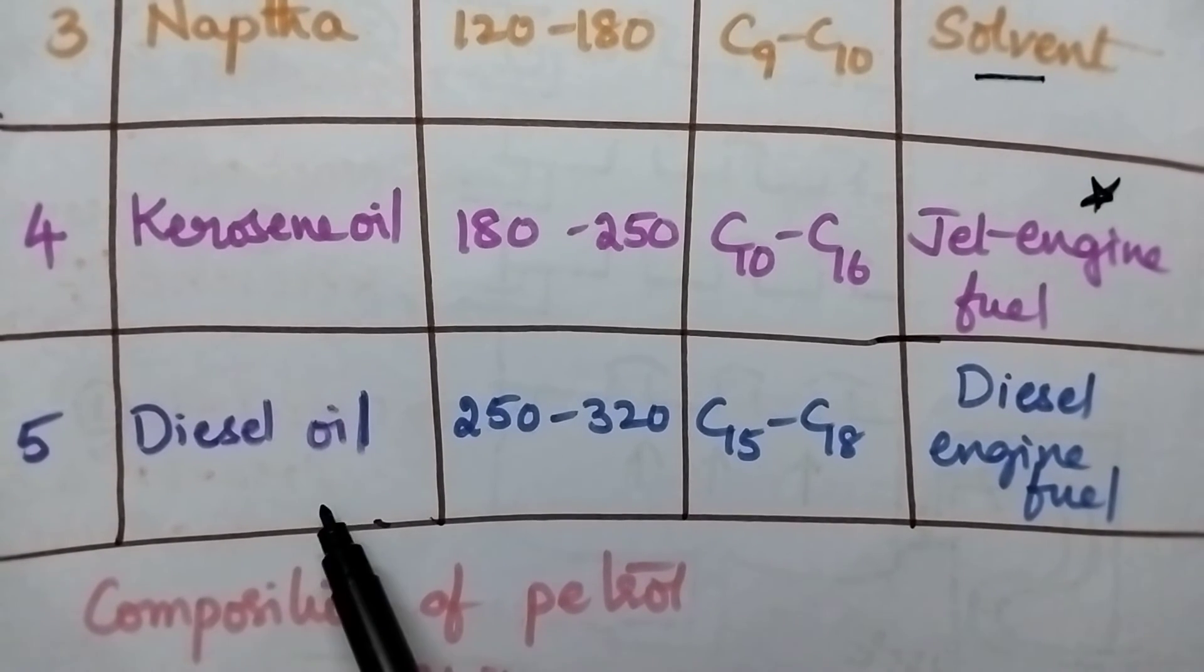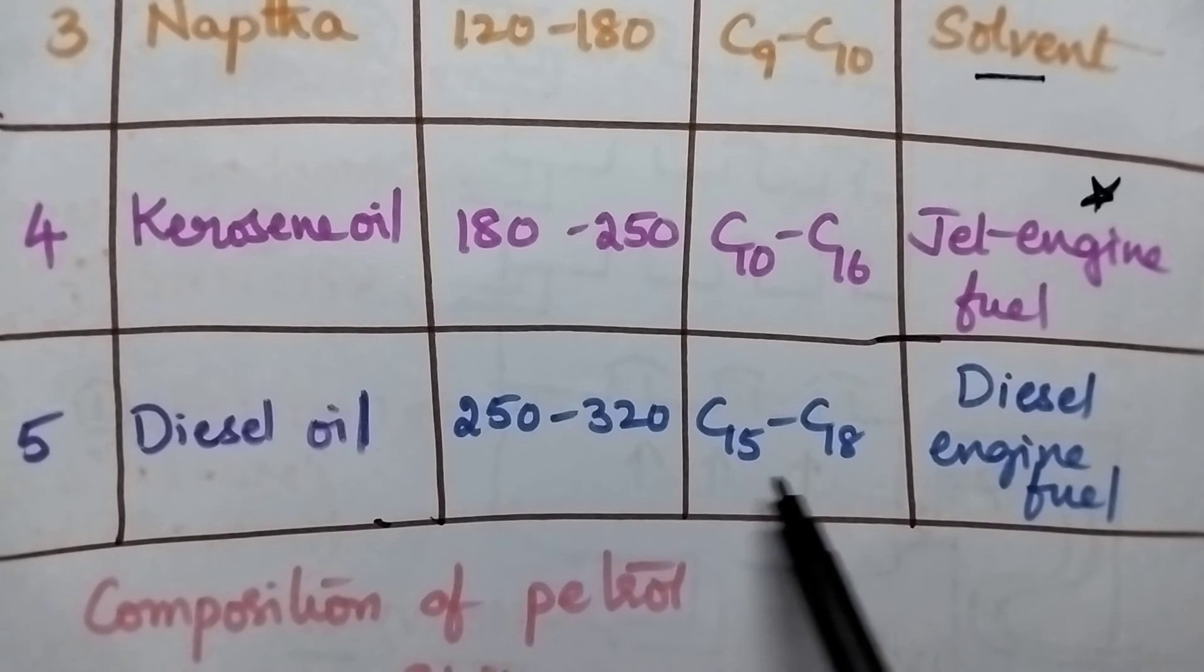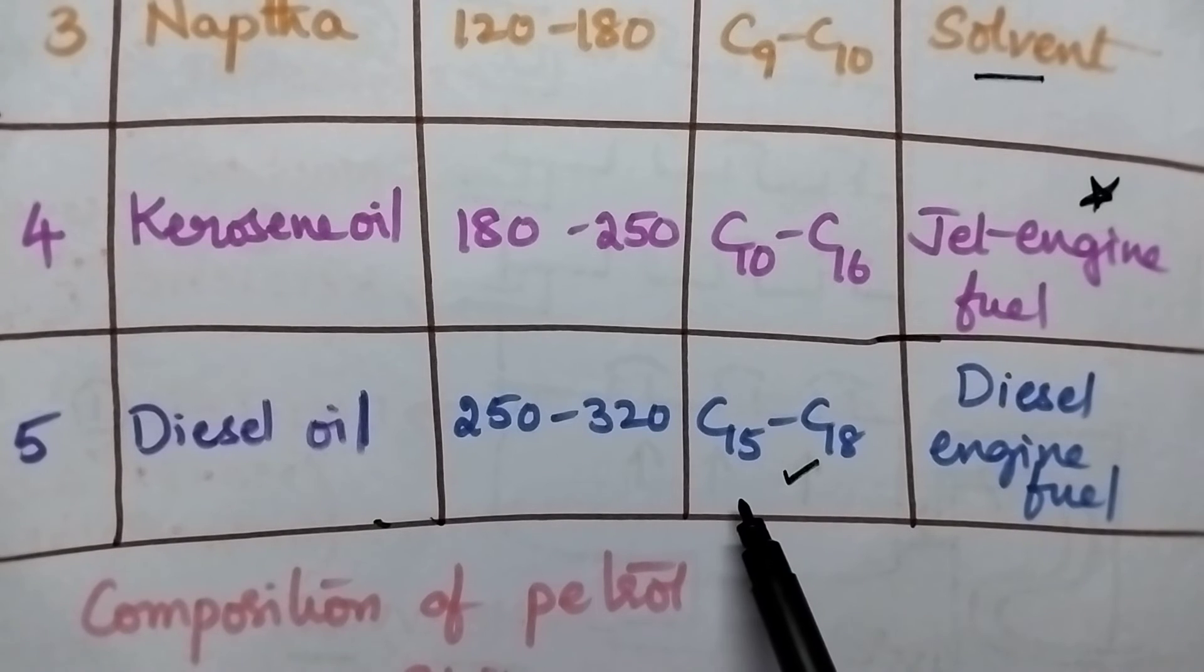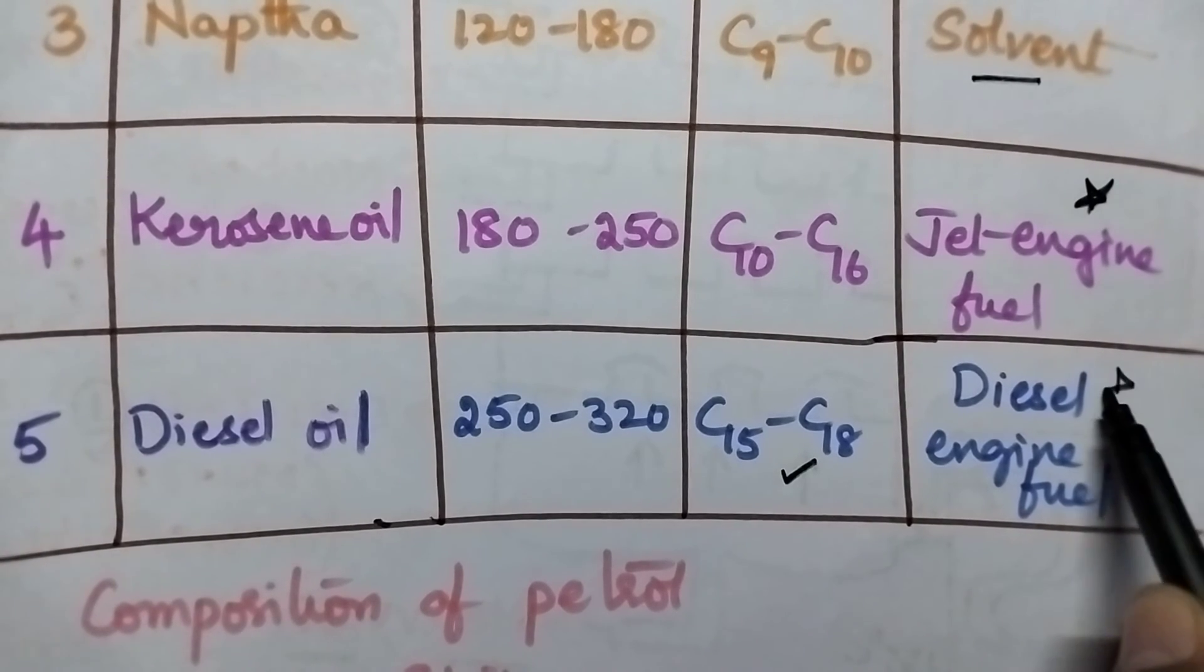The fifth fraction is diesel oil. Its boiling point is 250 to 320 degree centigrade, and this composition consists of hydrocarbons ranging from C15 to C18. It is the important diesel engine fuel.